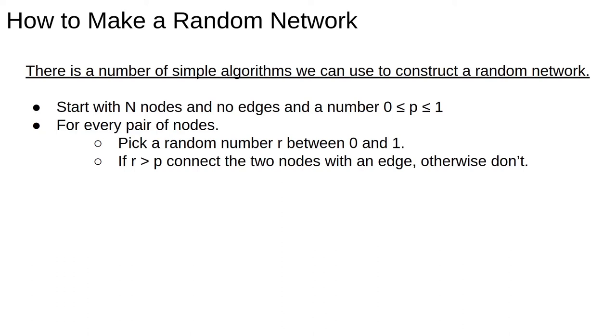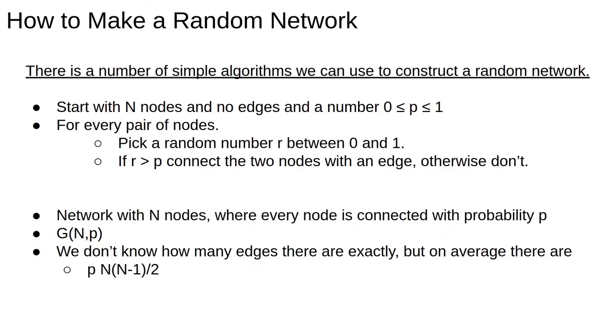For every pair of nodes, generate a random number and check it against p. If it's greater than p, connect that node pair with an edge, otherwise leave the nodes disconnected. After we've cycled through all the pairs, we have a random network with n nodes where each pair of nodes is connected with probability p.